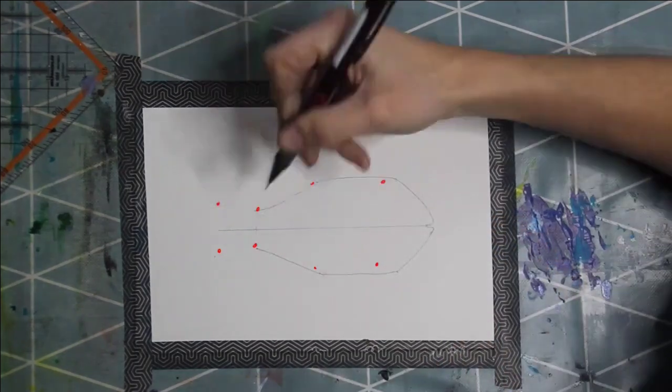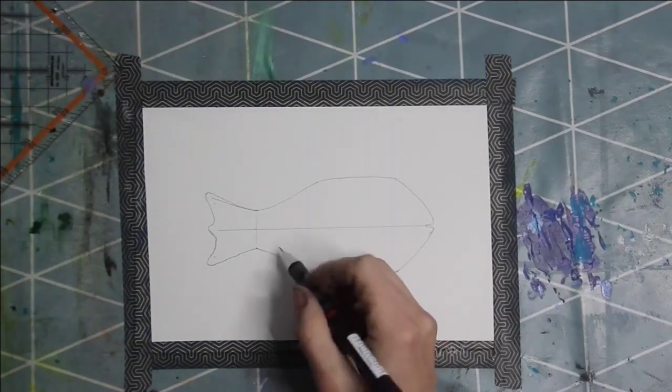Then sketch the body of the fish. For the mouth you draw a little U. Now you have your fish body.